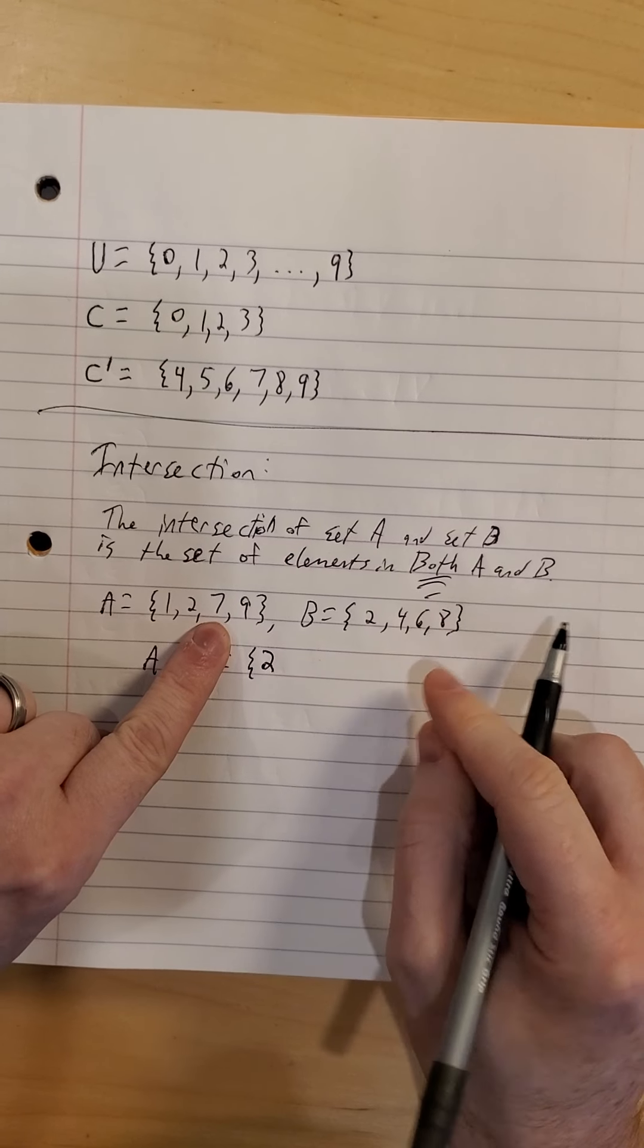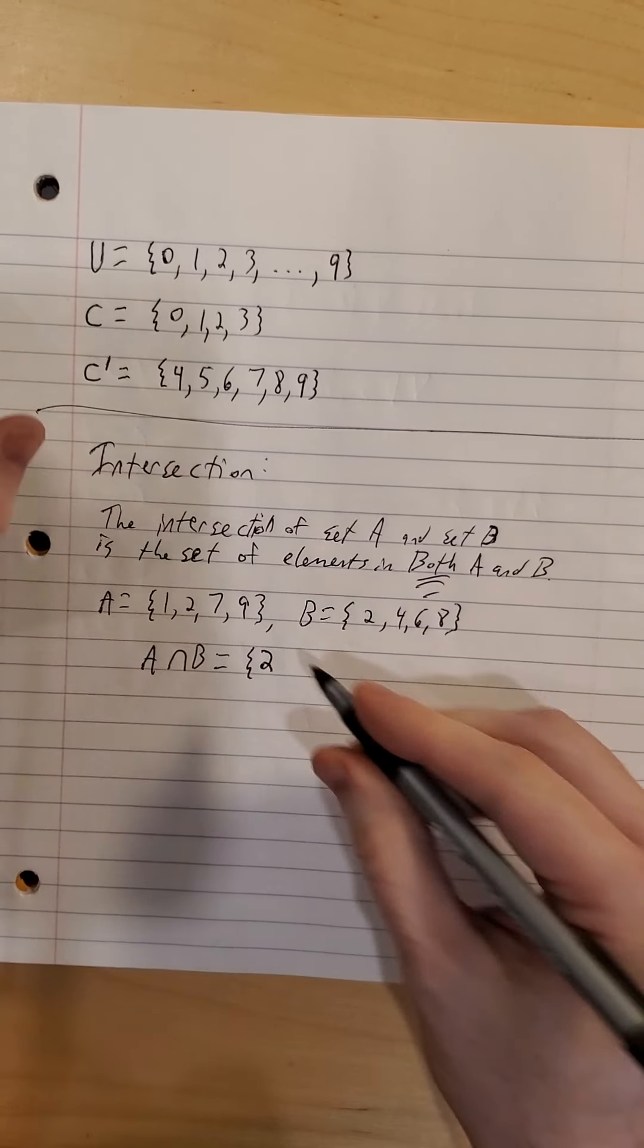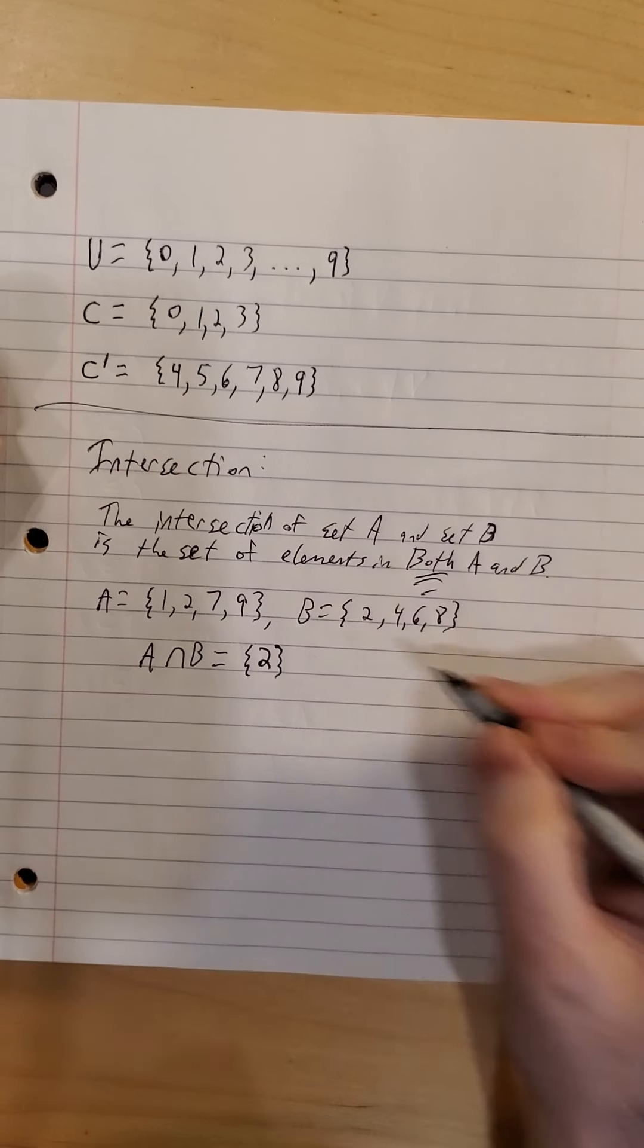7 is in A, 7 is not in B. 9 is in A, 9 is not in B. That's the end of our intersection.